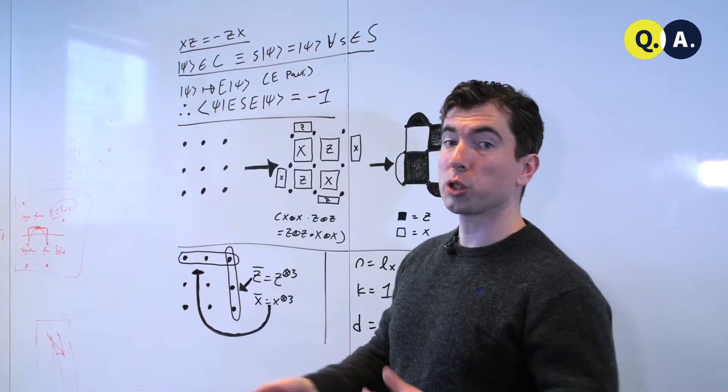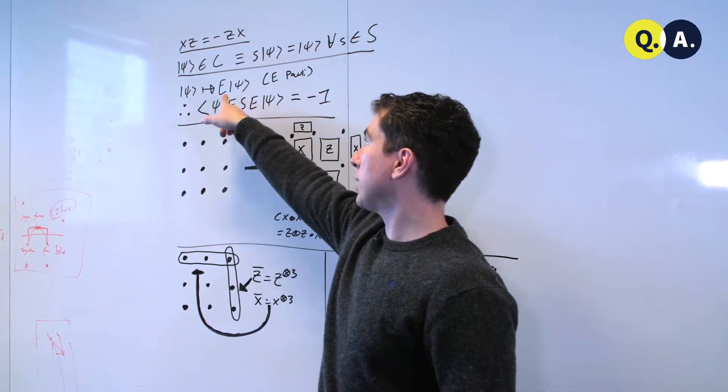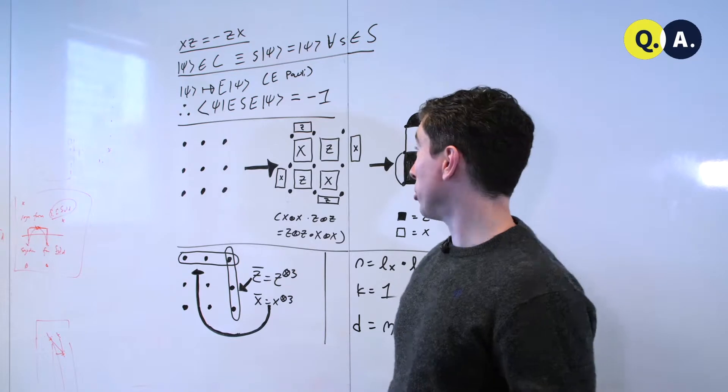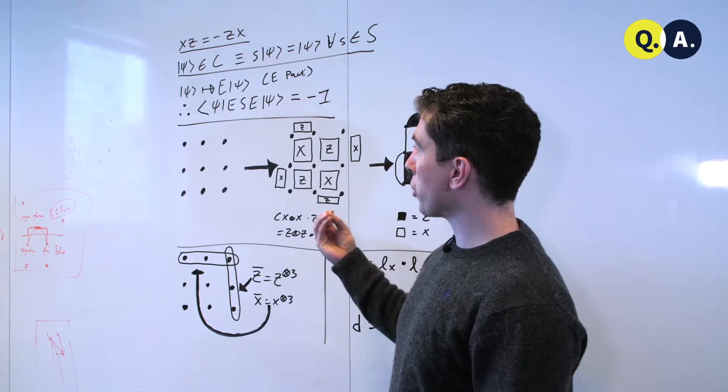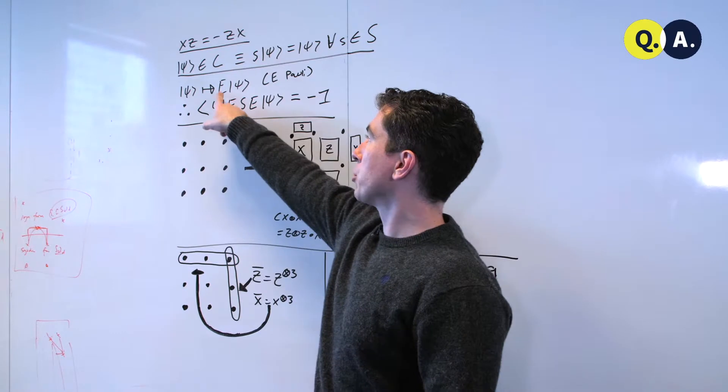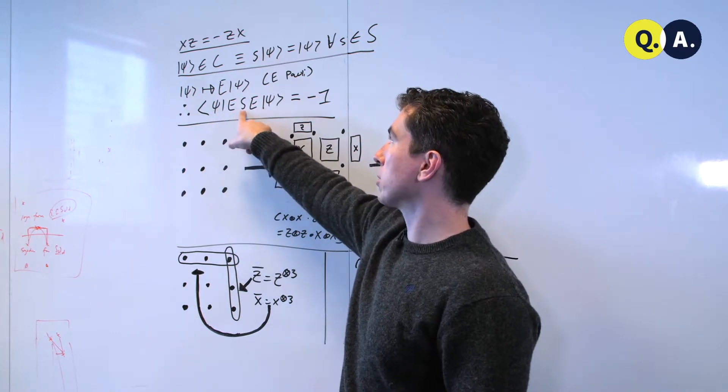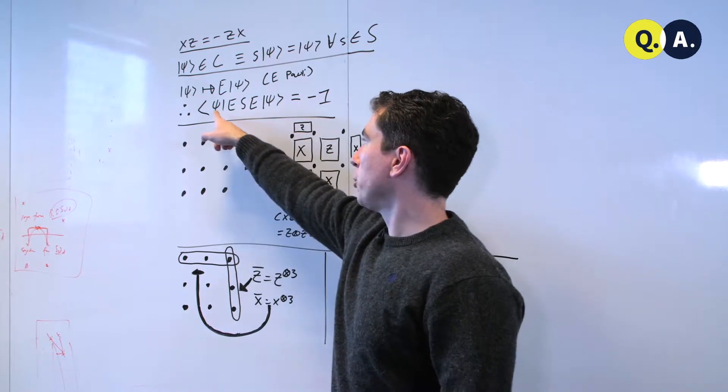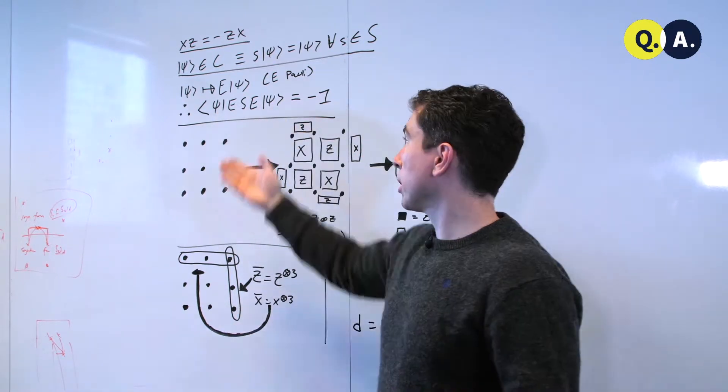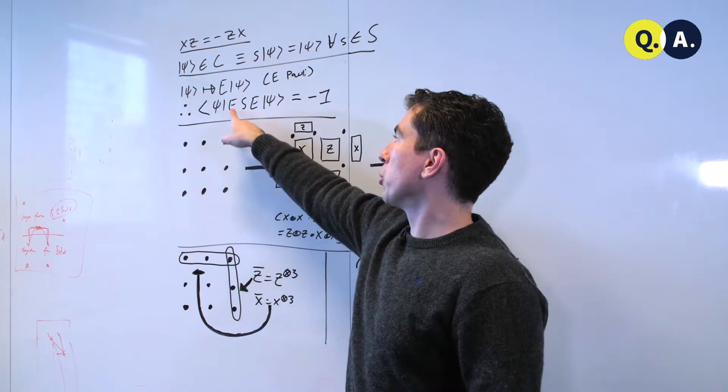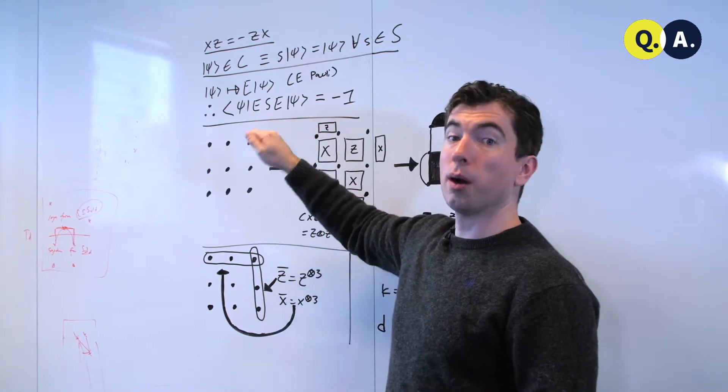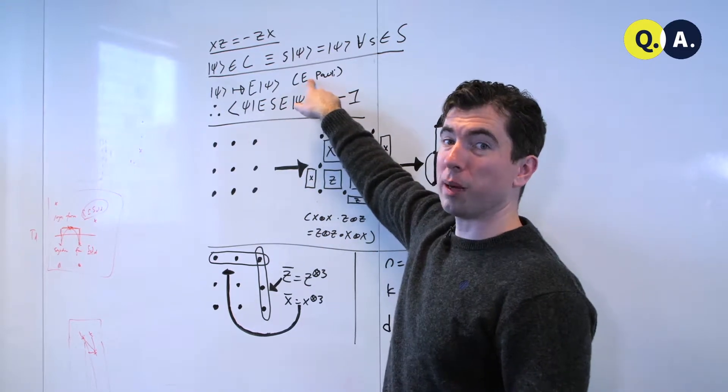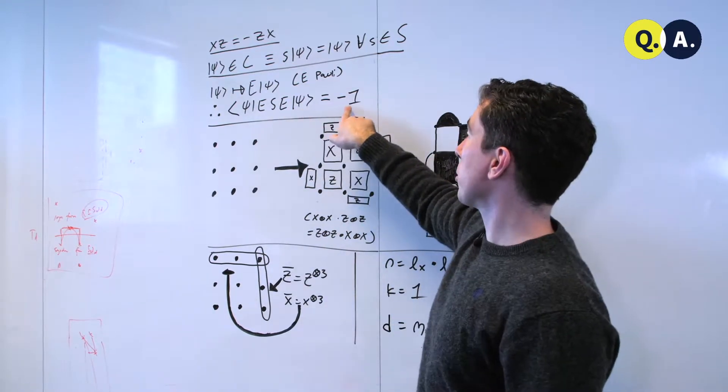each of these s's is going to be some multi-qubit Pauli operator, and that e, an error that may or may not have occurred, is also a multi-qubit Pauli operator. What happens if we try to measure s, and there's an e here that anticommutes with s the same way x does with z. If you go through this math for some specific example, or if you do it in general using only the fact that e times s is equal to minus s times e, and that e squared, like all multi-qubit Pauli's, is the identity, you'll end up getting minus 1.